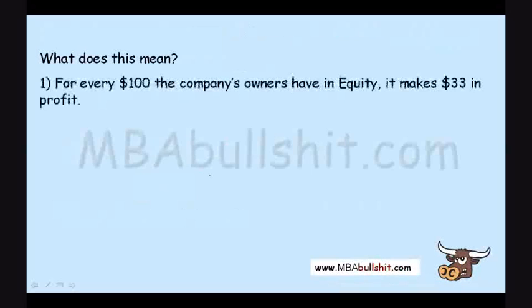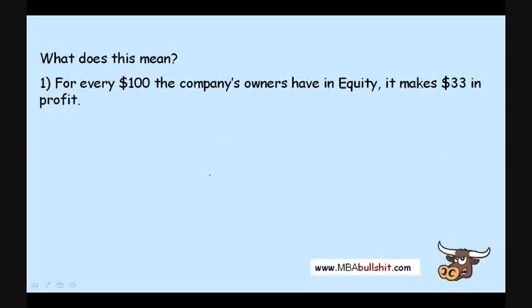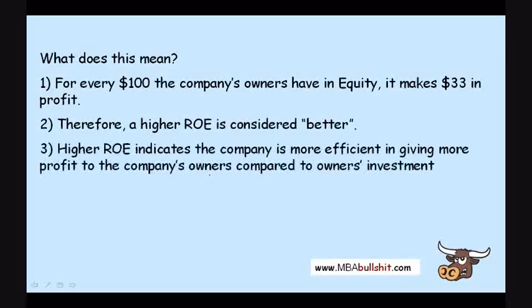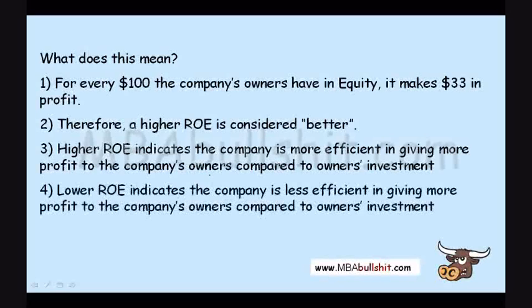So what does this mean? This simply means that for every $100 the company owners have in equity, it makes $33 in profit. A higher ROE is considered better. A higher ROE indicates that the company is more efficient in giving more profit to the company's owners compared to their personal investment in the company. A lower ROE indicates that the company is less efficient in doing so.